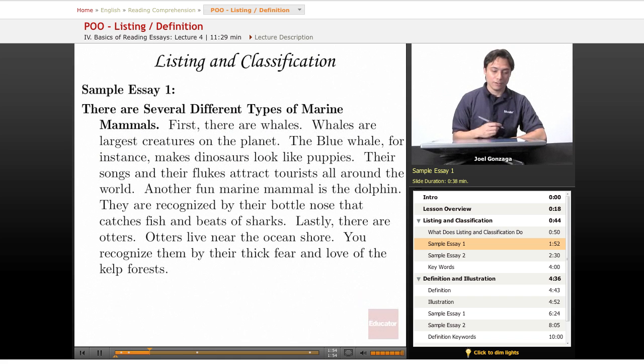Sample essay number one: There are several different types of marine mammals. First, there are whales - blue whales, for instance. Another fun marine mammal is the dolphin. Lastly, there are otters.